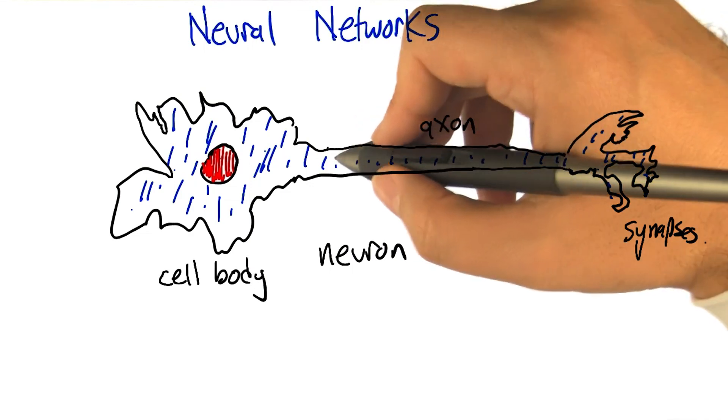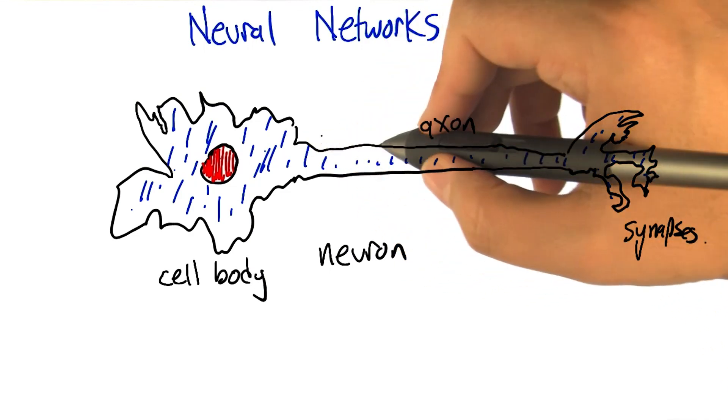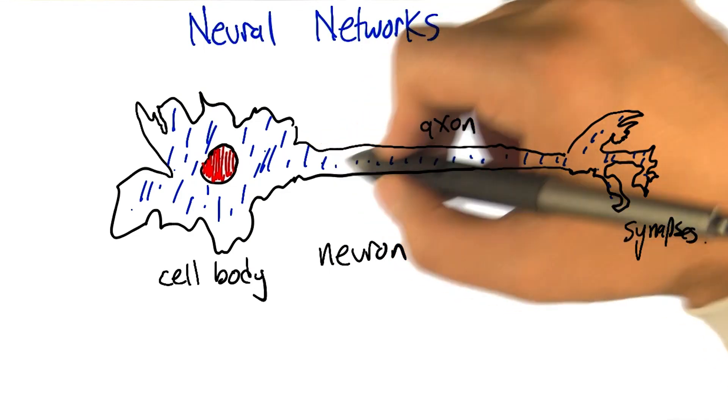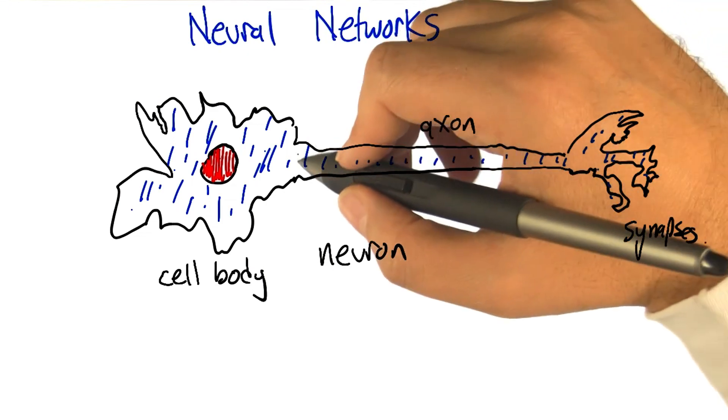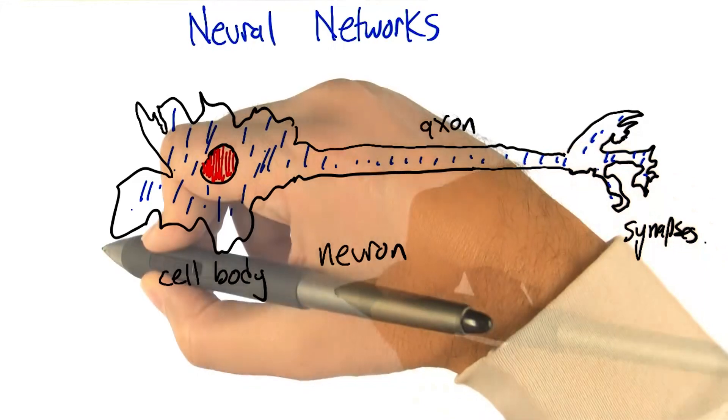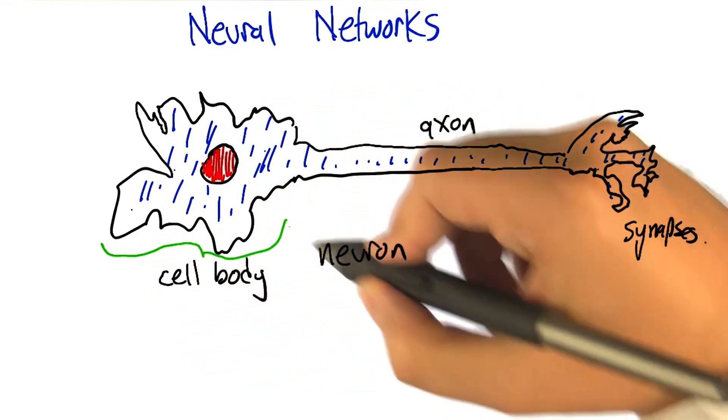So this is my attempt at drawing a nerve cell, a neuron. And you've got billions and billions of these inside your head. And they have, most of them have a pretty similar structure. There's the kind of the main part of the cell, called the cell body.